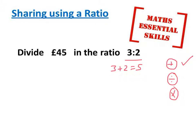Then we divide. 45 divided by 5 is 9. That tells me each share in this ratio is worth £9.